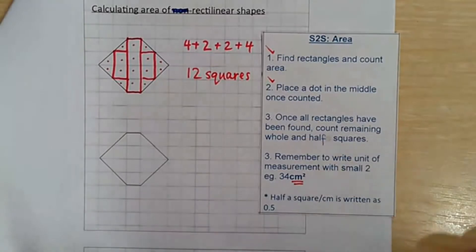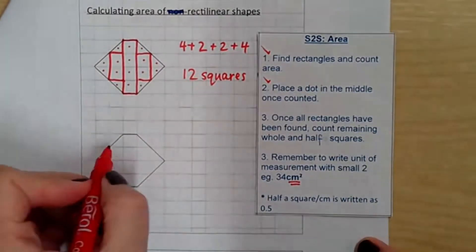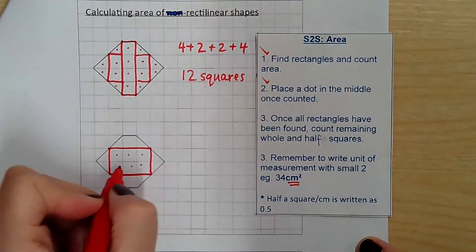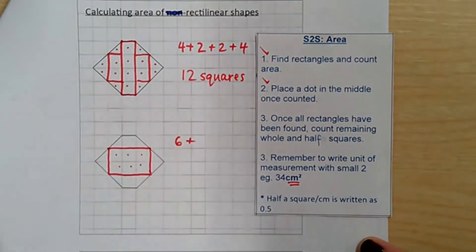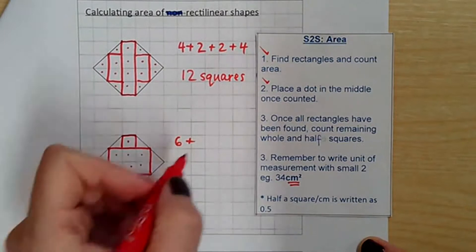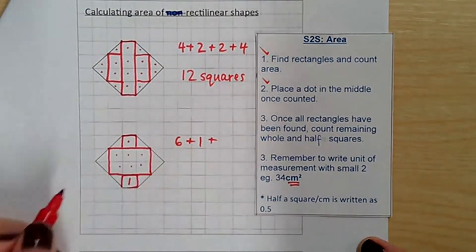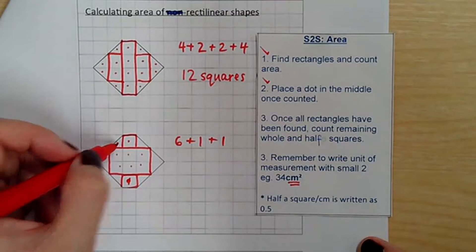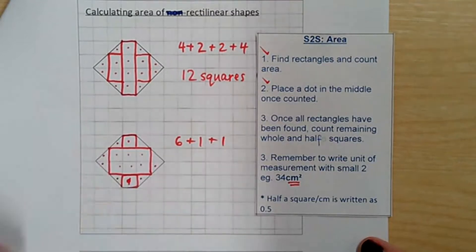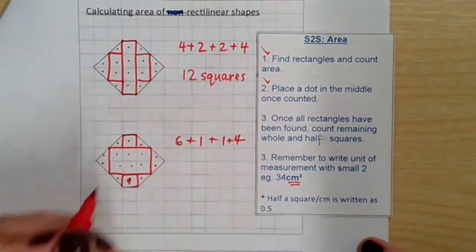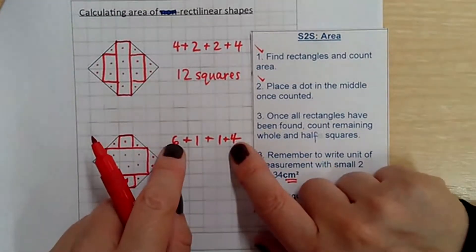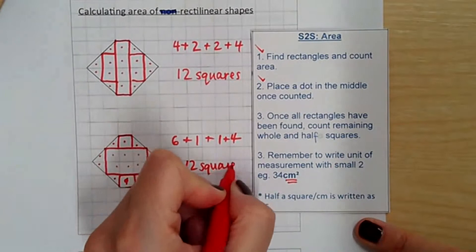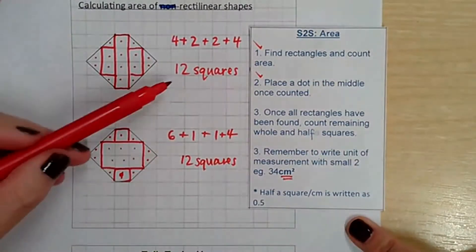Perhaps you saw different rectangles — that's OK. Maybe you saw this larger one: counting 1 through 6. Then one square here and one more here. Counting the remaining triangles: 1, 2, 3, 4. So six plus four is ten, plus one plus one equals 12. Although we counted different rectangles, the area is still the same.